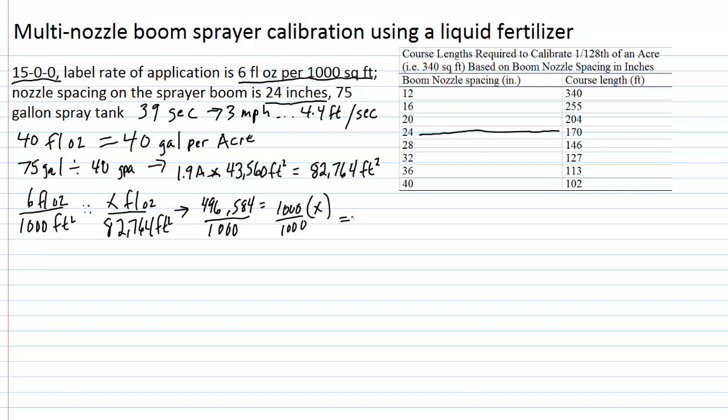And we end up here with units that are 496.6 fluid ounces is what is going to be required to go in the full spray tank. And what we'll usually do is divide this by 128 fluid ounces that are in a gallon to convert this number to gallons. So 496.6 divided by 128, we need roughly 3.9 gallons of this 15-0-0 fertilizer to go in a full tank to deliver 6 fluid ounces of the product per 1,000 square feet.